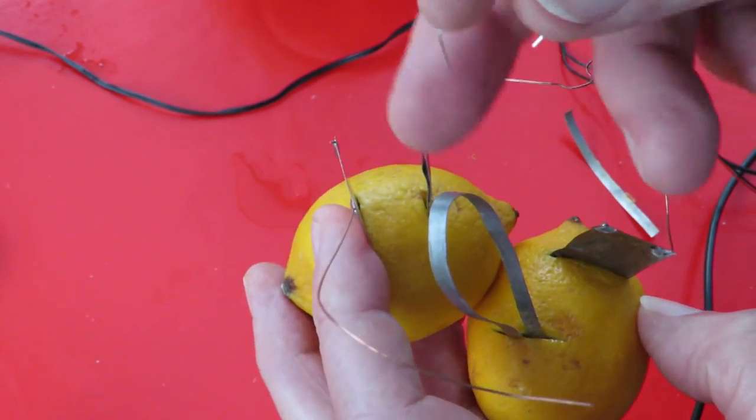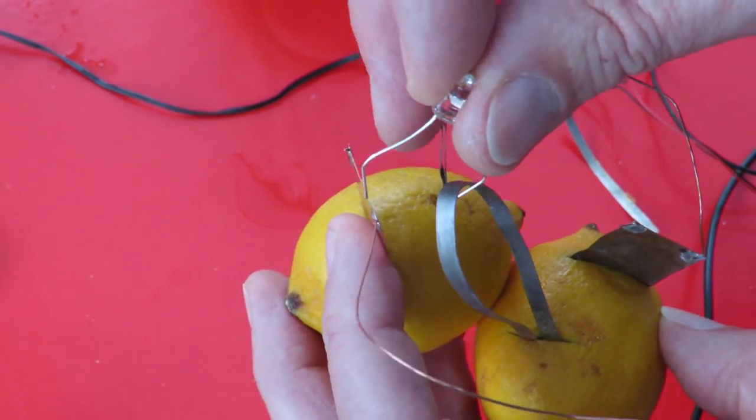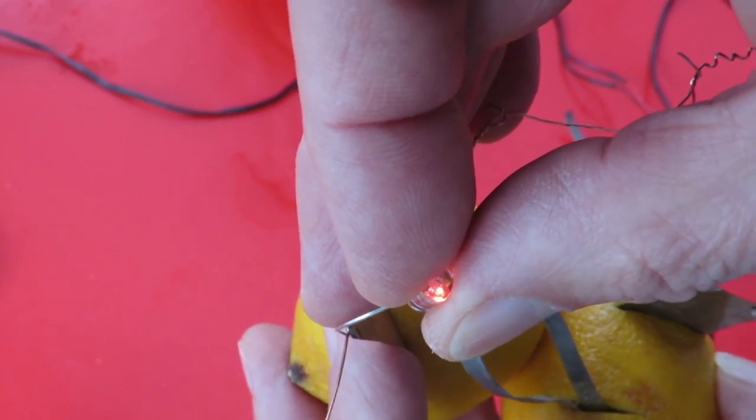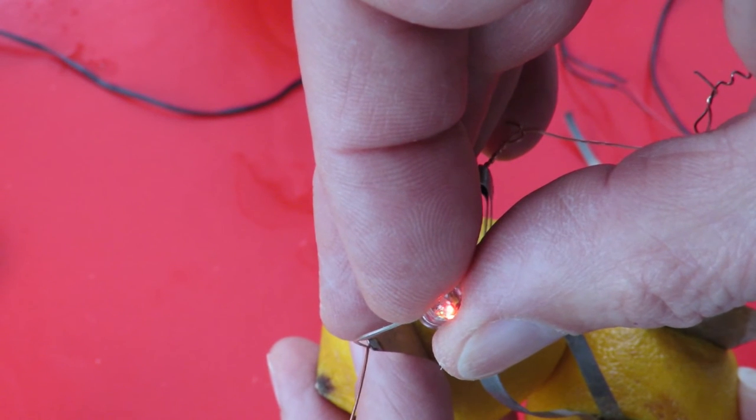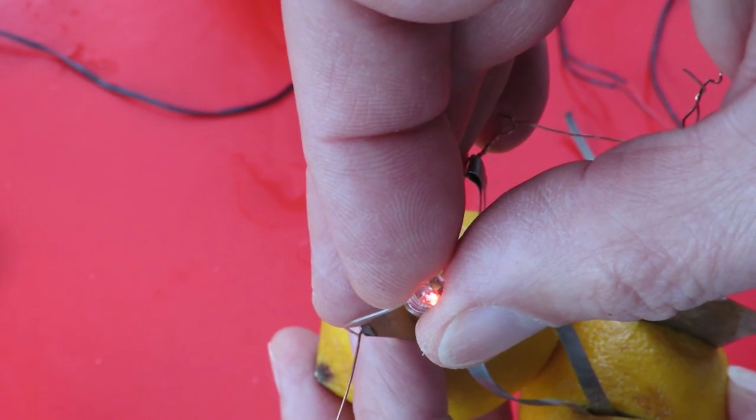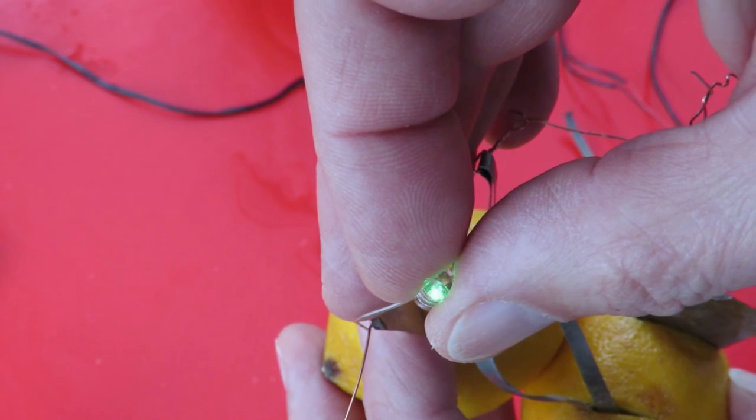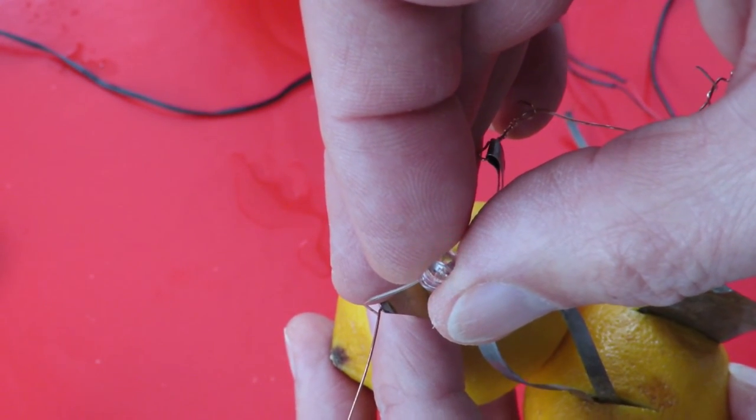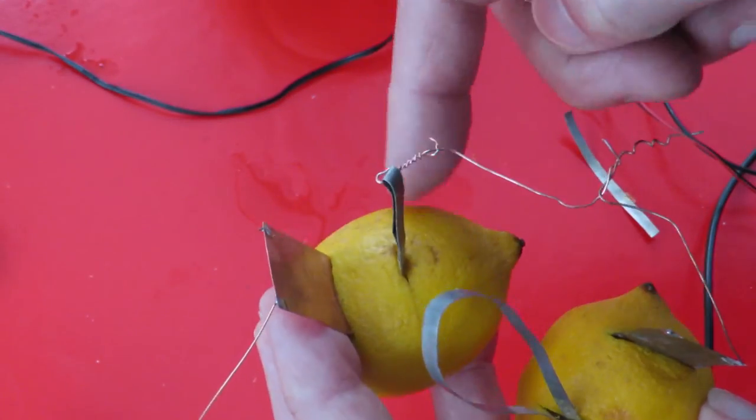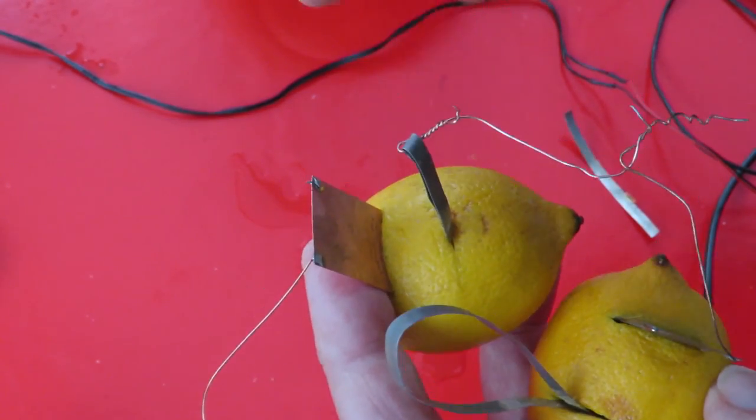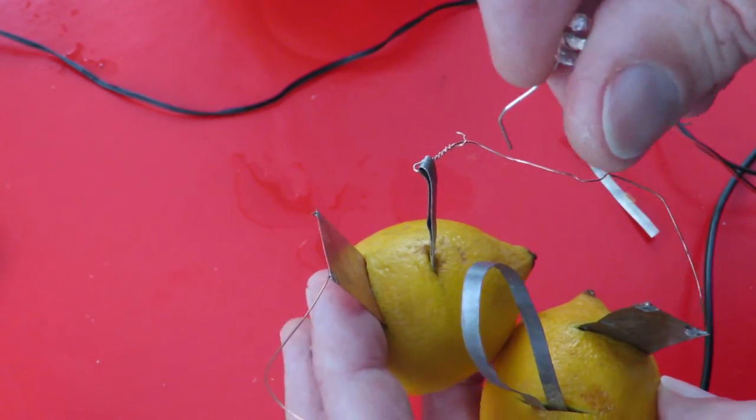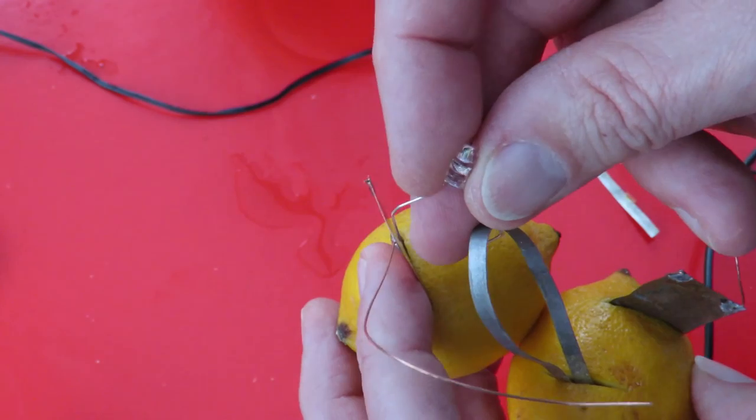So, if we go across two lemons in series. Now you can see we've got plenty of voltage. And the LED goes through its color sequence. So, one lemon with copper and magnesium is just enough for this LED. Two lemons in series, we've got plenty of voltage.